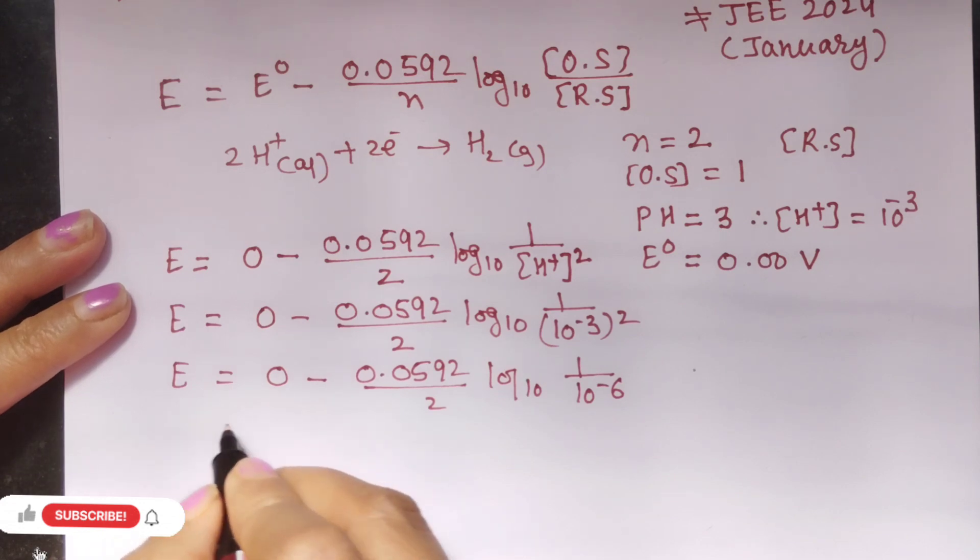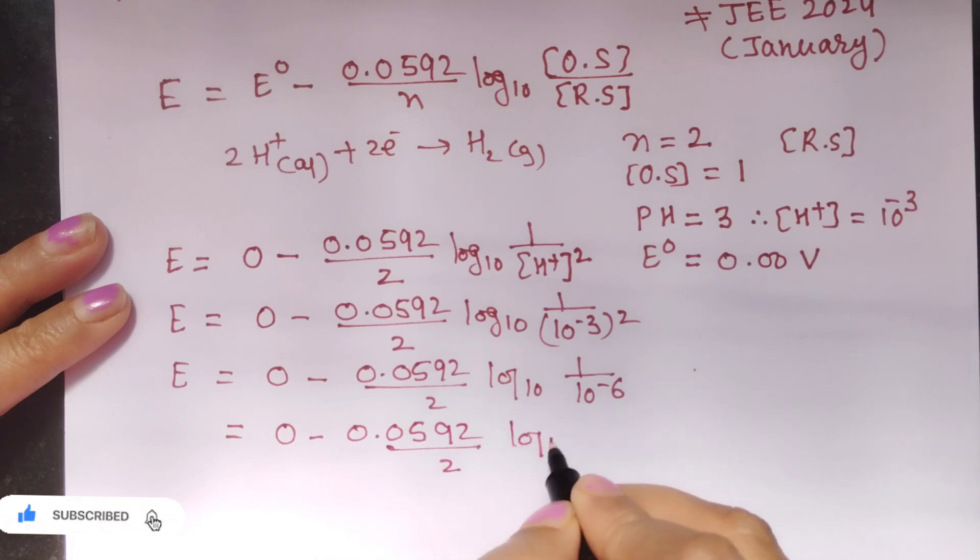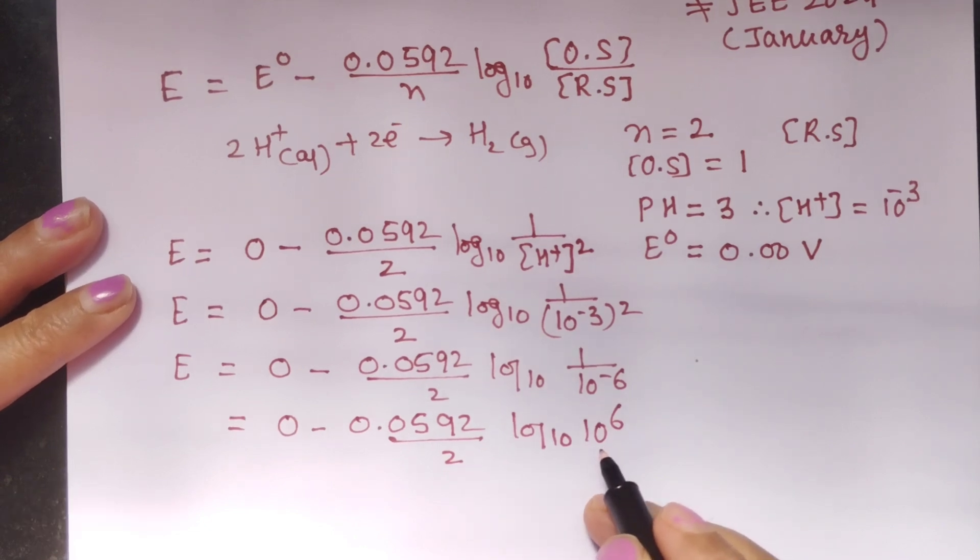Let us again solve this. So that is 0 minus 0.0592 upon 2. Log to the base 10 of I can write this in this form also. Log to the base 10 of 10 raise to 6 is 6.